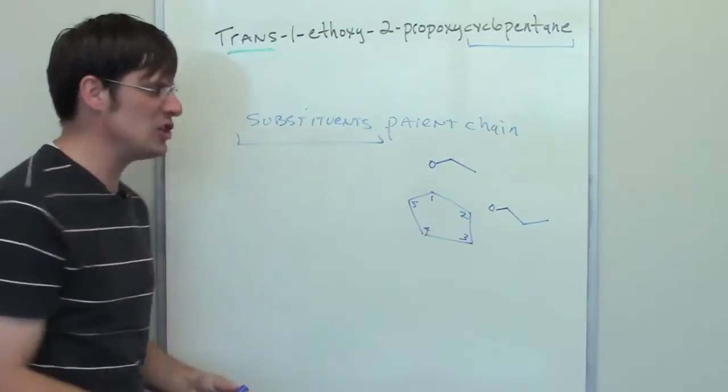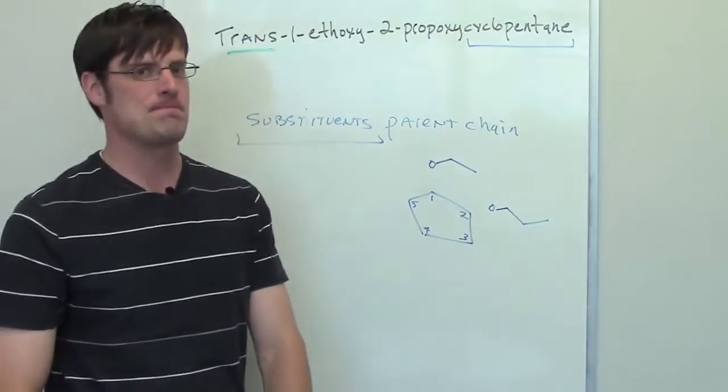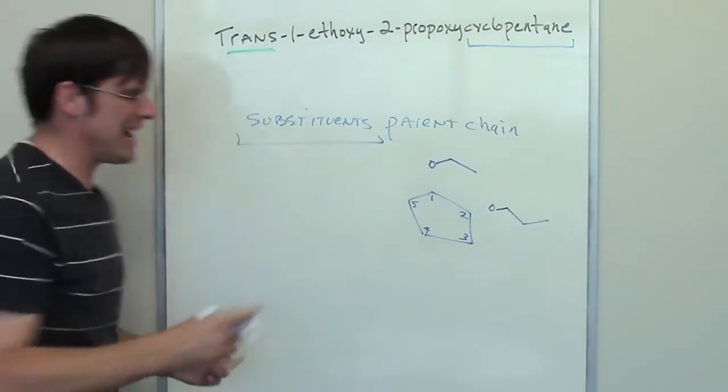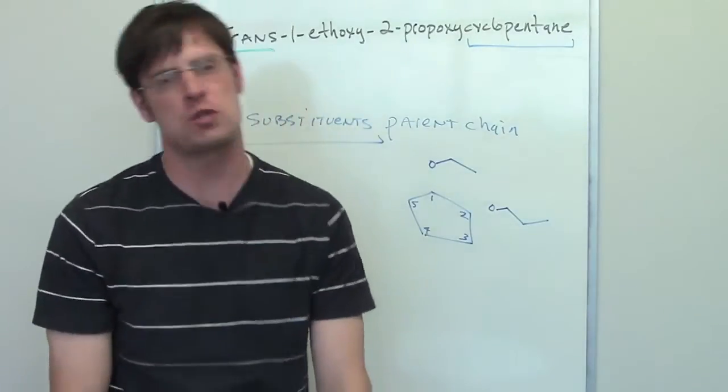So, dangling off of carbon two, I've got a propoxy group. Now, the prefix trans tells me how these two groups are oriented three-dimensionally with respect to each other. They must be pointing in opposite directions.